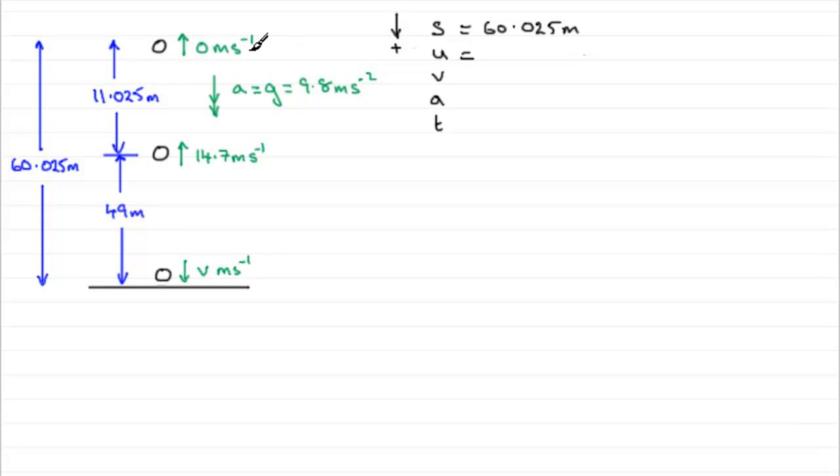U, the initial velocity, well at the start here, it came to rest there. It's now going to start off 0 metres per second on the way down. So we'll have U then as 0 metres per second.